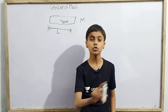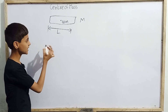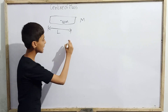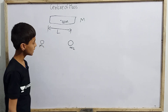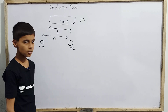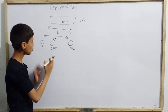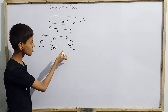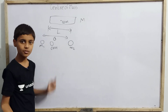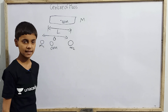Today we will mainly be discussing the position of center of mass in a system of two particles. Suppose two particles of mass m1 and m2 — here is a particle of mass m1, here is a particle of mass m2, and the separation between m1 and m2 is d. The center of mass is at some point where the total mass m1 plus m2 acts, but what exactly is its position?